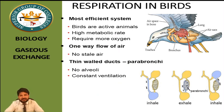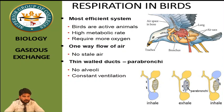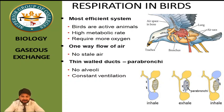Next is respiration in birds — the most efficient respiratory system. Birds continuously require energy because they fly; they are active animals with a high metabolic rate, so they require more oxygen. As discussed at the start of this chapter, respiration has two functions: production of energy and exchange of gases. Since energy requirement is high, the respiration rate in birds is higher compared to others.